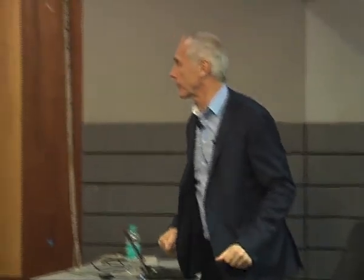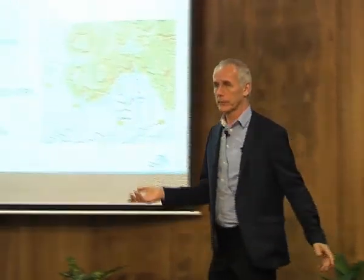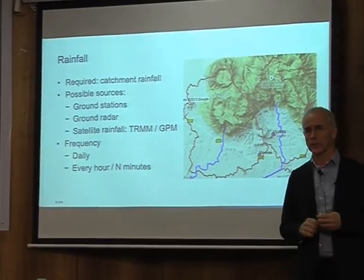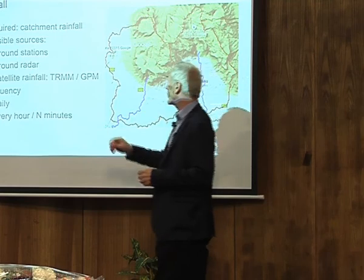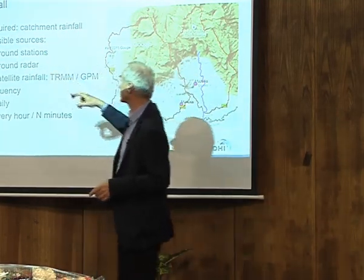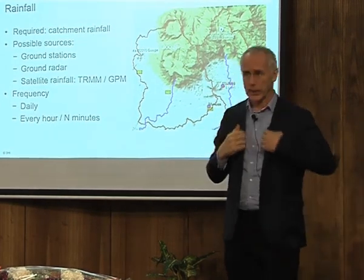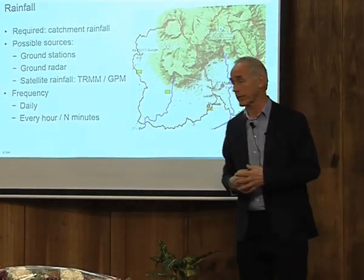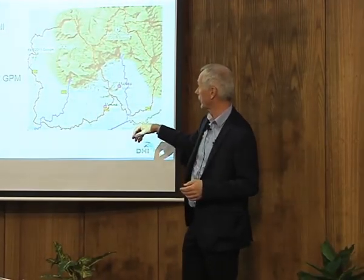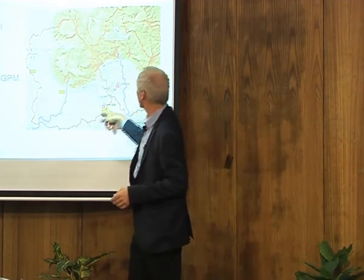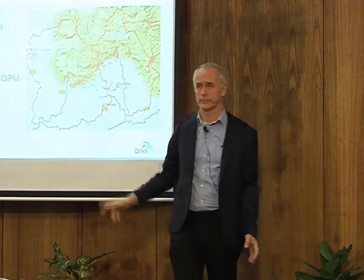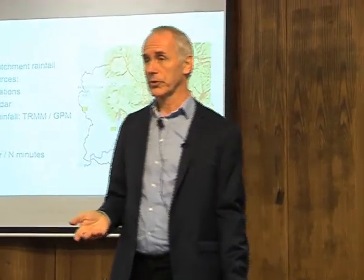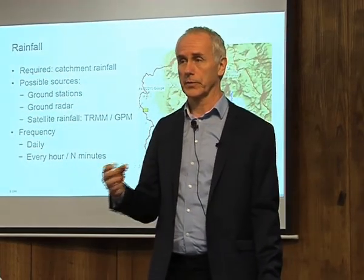The input data is rainfall and potential evaporation, and maybe temperature if you need to describe snow. What we need is the catchment rainfall, and typically you get this from stations in the area. This is an example from Africa with one catchment and rainfall available at only two stations — that's it. This is a typical situation.